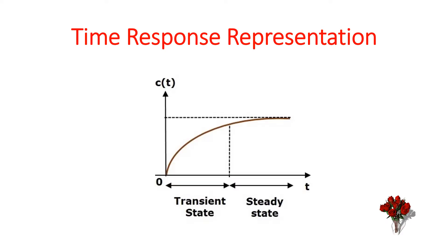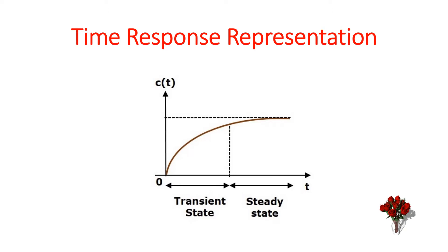The time response representation is shown below. A system is subjected to a standard input, and based on the input we are obtaining the output. Immediately we are not obtaining the output — it takes some time to reach the steady state. The period before the system reaches the steady state is called the transient state. Both the transient state and the steady state are represented in this diagram.